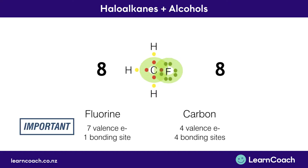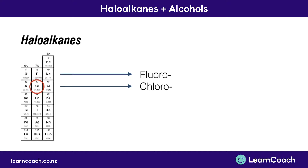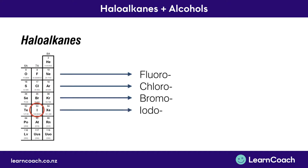This is important to know because exams will often ask how halogens are bonded to alkanes to make a haloalkane. Now we'll look at naming them. Anything with a fluorine atom is fluoro-, chlorine is chloro-, bromine is bromo-, and iodine is iodo-.